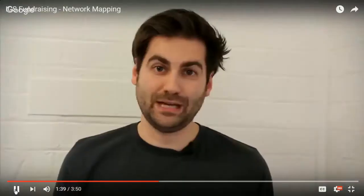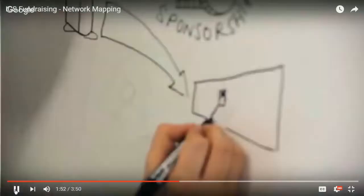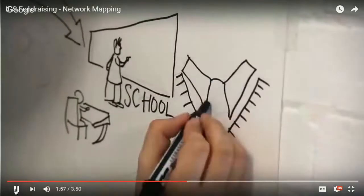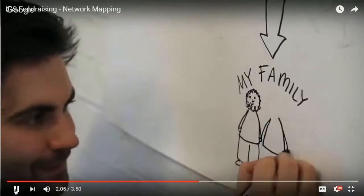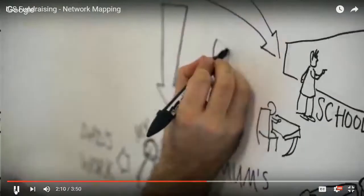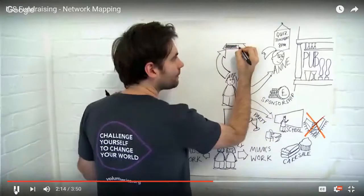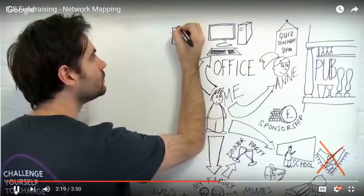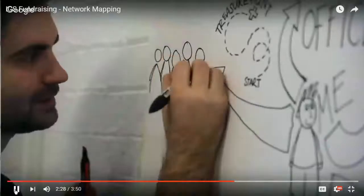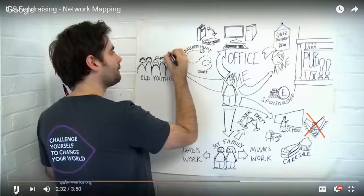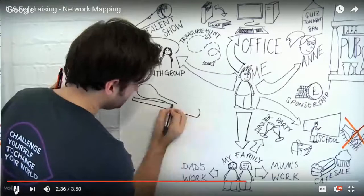You can carry on doing this with loads of different people — do it with as many as you can think of. Or you can start doing it with groups or organizations you've been involved with in the past. For example, I'm going to think about my old school, my family, my office or workplace, and any youth groups I might have been part of when I was younger. Once you've spent about 15 or 20 minutes doing this, you should have filled up your page with loads of possible fundraising links to make use of.